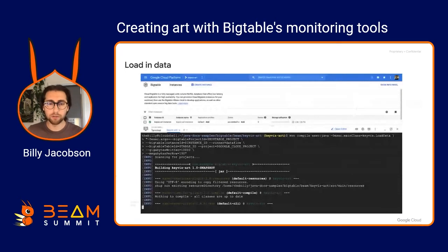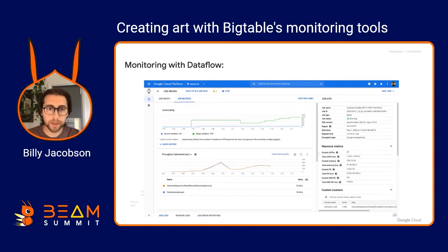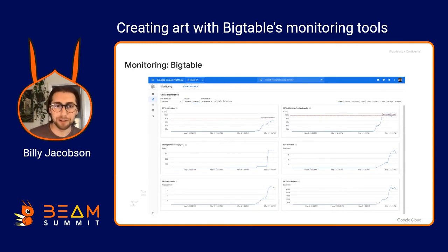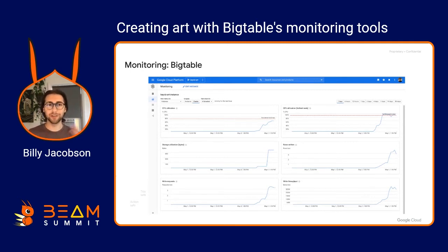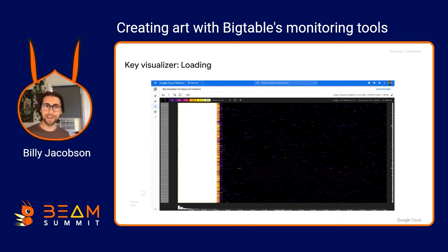I load in the data and just run the Java code — that's all available. I can monitor it with Dataflow, which is one of the great things about a managed runner: it scales up workers for me and you can monitor throughput to make sure everything is working smoothly. I can also monitor it on the Bigtable side — my graphs were shooting up really high. I was getting a little beyond the CPU utilization, so I added a few nodes. Then I went to the Key Visualizer and there's a huge bright light at the start because of all the data being written, but it's all distributed, which is good.